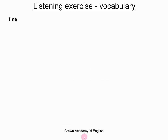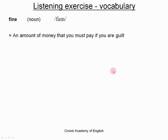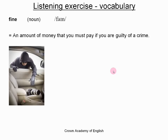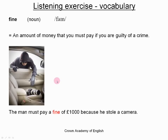Vocabulary. The first word is 'fine'. This is a noun. A fine is an amount of money that you must pay if you are guilty of a crime. So if somebody commits a crime, sometimes they go to prison, but other times they must pay a fine. Here is an example: the man must pay a fine of a thousand pounds because he stole a camera. So the man is guilty of stealing the camera and his punishment is he must pay a fine.